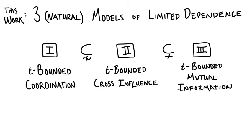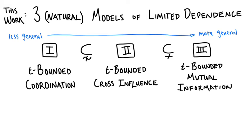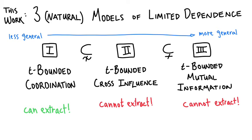We have three models: bounded coordination, bounded cross influence, and bounded mutual information. The left is the least general; as you move to the right, the classes grow. All of these models are parameterized by t, which controls how dependent the sources are. As a sanity check, if t equals zero you recover the case of independent sources, and if t equals the min-entropy of the sources themselves, you recover the case of x and y being identical. We look at these models in the context of randomness extraction, and we show that only in the first model can you extract — in the other cases you cannot.